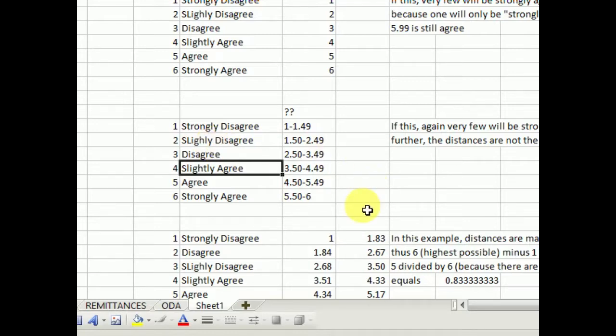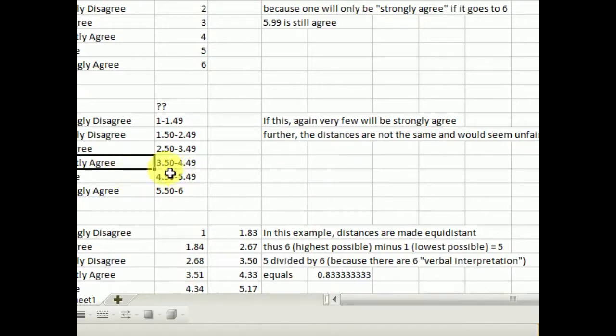Again, if this would be used, not only would it be unfair because of the rounding up, remember that the people who scored slightly agree meant that they slightly agree. Those who scored disagree does not intend their item, their scores, to be slightly agree. But if you use this, then if it goes to a certain point, then you are interpreting it in a higher scale, which is unfair. Again, further, the distances are not the same. The strongly disagree has just .5, the area of this is only .5, the area of this is only 3.5, and everything is 1. So again, this will be unfair to both poles.